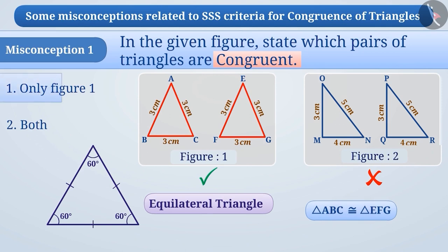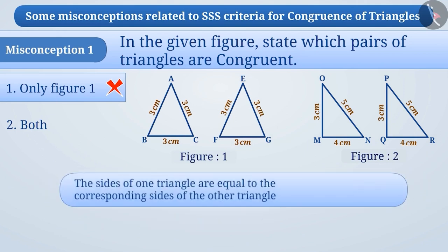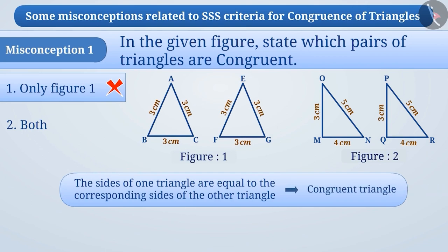With this understanding, they select option 1, which is an incorrect answer. The correct understanding is that when the sides of a triangle are equal to the corresponding sides of the other triangle, the two triangles are called congruent triangles.